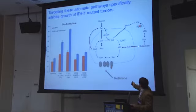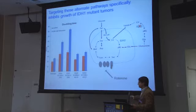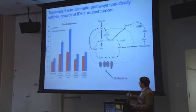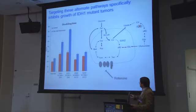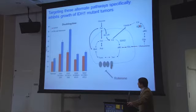While IDH1 mutant cells can't use reductive metabolism, they rely more on oxidative metabolism. So we treat this panel of cells with an inhibitor of mitochondrial metabolism, rotenone, which is obtained from the leaves of the jicama plant. It significantly increases the doubling time of IDH1 mutant cells — that is, it decreases the growth rate. This suggests that inhibiting oxidative mitochondrial metabolism may be a specific way to target tumor cells with IDH1 mutations.